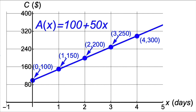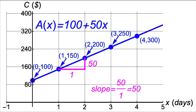Let's focus on the graph of A(x) to see how we find a formula for a linear function in general. If we draw a right triangle in the picture, the rate of change of cost with respect to number of days — $50 per day — can be represented as the ratio of the lengths of the sides of the triangle. This is also called the slope: 50/1 = 50.